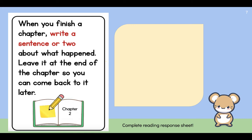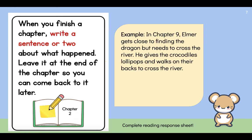Like we do at the end of every chapter, it says: when you finish a chapter, write a sentence or two about what happened, and leave it at the end of the chapter so you can come back to it later. I want you to go ahead and write a short two-sentence summary. Pause this video and unpause when you're ready to check your answer with my example. Here's my example for chapter nine: In chapter nine, Elmer gets close to finding the dragon but needs to cross the river. He gives the crocodiles lollipops and walks on their backs to cross the river.